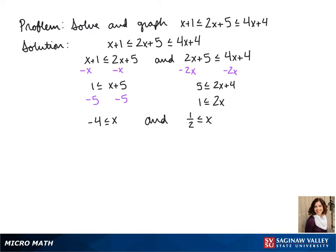Since our possible answers have to meet both conditions, all the numbers between 1 half and negative 4 aren't bigger than 1 half, so they can't be included as possible answers.